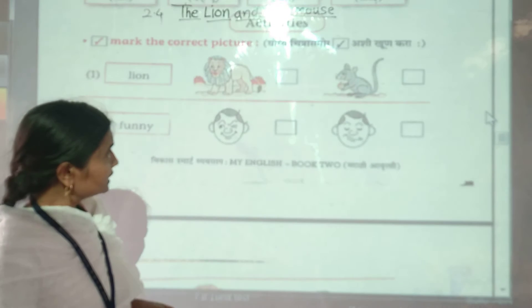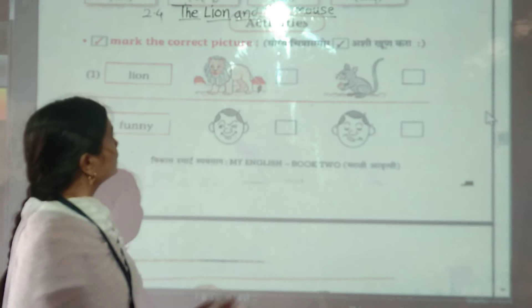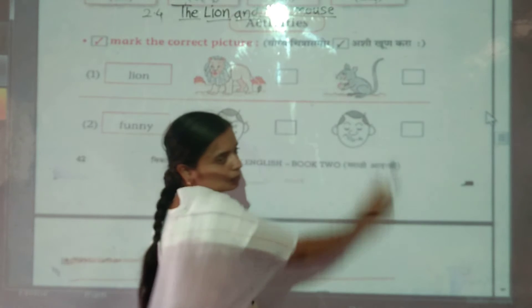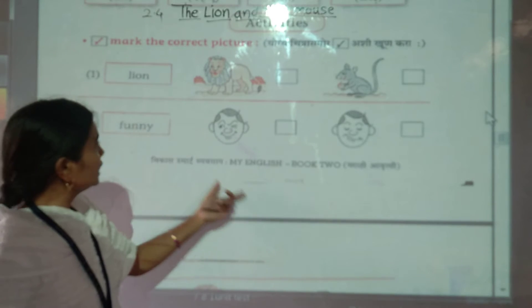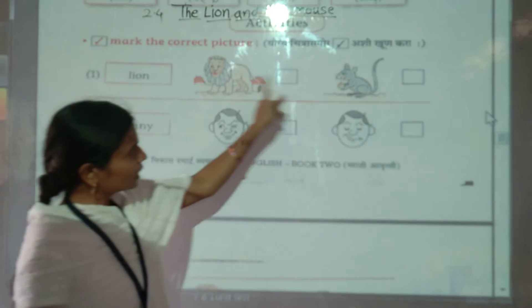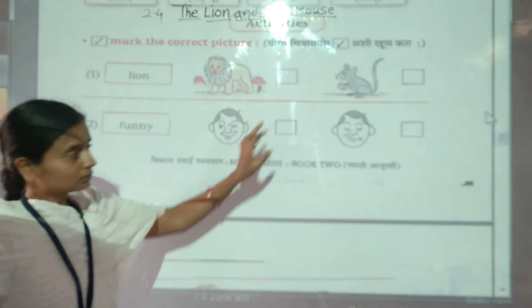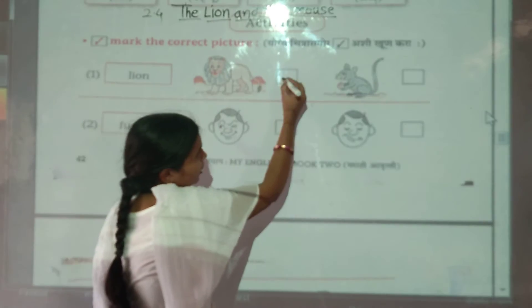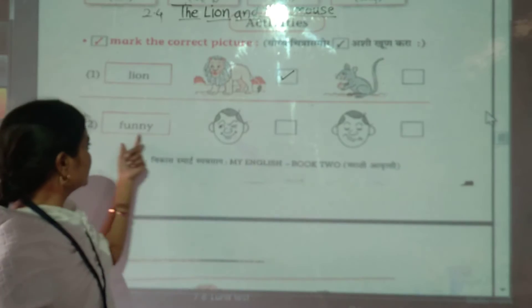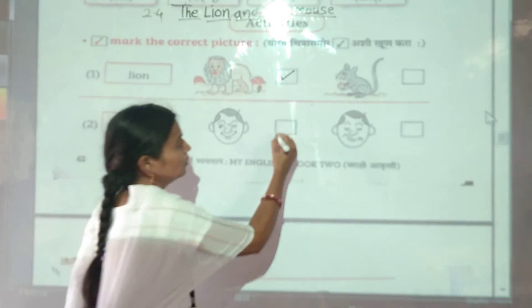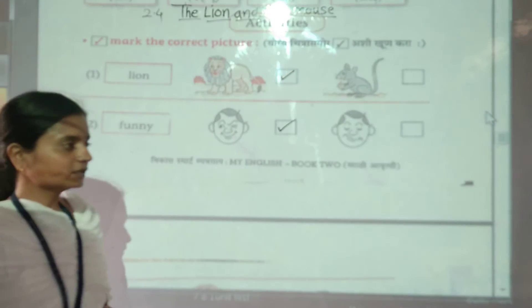So let's start. First, I will read questions and you look here. Mark the correct picture. The first picture is about the lion, the opposite. On the left side is the lion and the other one is the mouse.